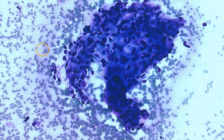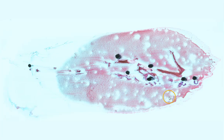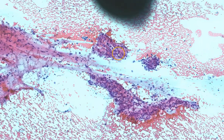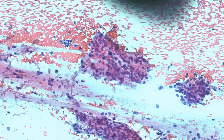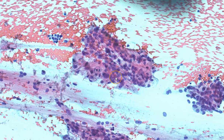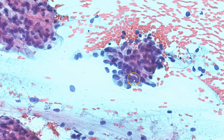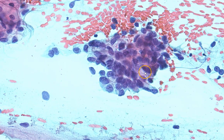Let's take a look at the alcohol-fixed smear. Here is the corresponding Papanicolaou-stained alcohol-fixed smear. Again, we can see these drunken honeycomb sheets of cells, these very disorganized crowded sheets of cells. Some of the cells do indeed have quite low NC ratios, and the nuclei vary moderately in size. Here is a crowded group, and you can see the nuclear membranes are irregular.